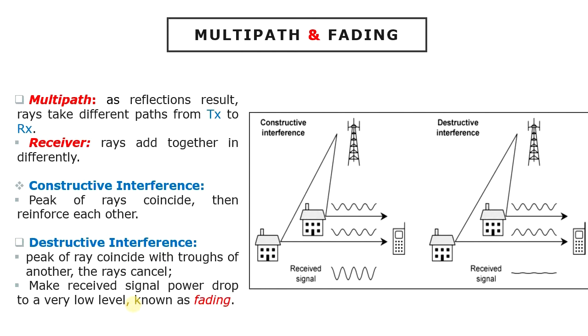If the peaks of incoming rays coincide then they reinforce each other, a situation known as constructive interference. But if, however, the peaks of the rays coincide with the troughs of another, then the result is destructive interference, in which the rays cancel each other.